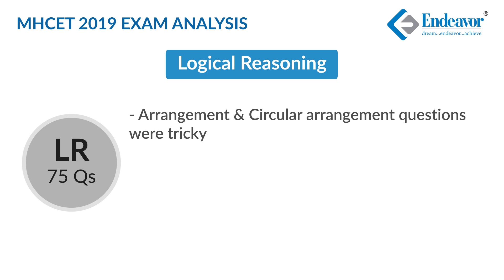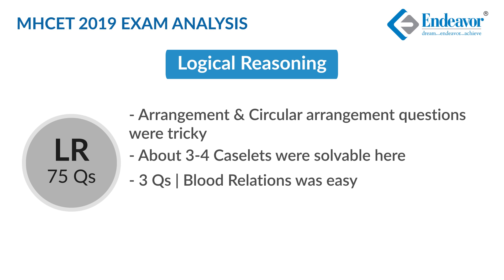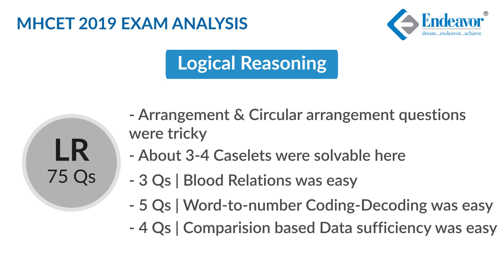Arrangements and circular arrangement questions were a little on the trickier side, but if given sufficient time, were doable. At max, one could solve about 3 to 4 of the caselets, and the key was to pick the right set to solve. There was also a blood relation caselet with 3 questions that was of easy level. A set of 5 questions based on word-to-number coding-decoding were doable, and 4 questions based on comparison-based data sufficiency were doable as well.